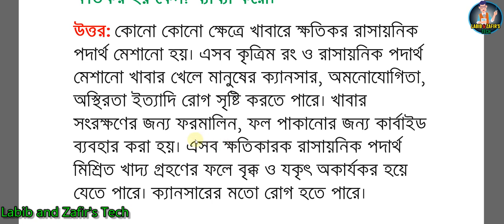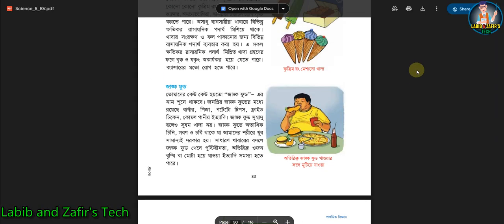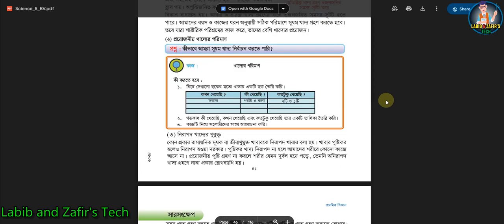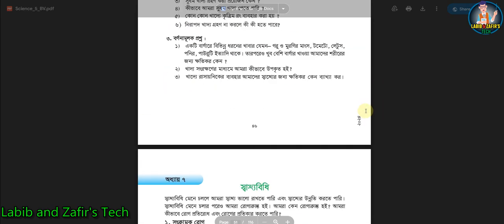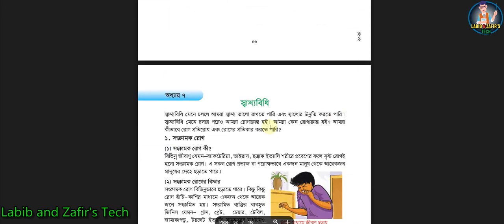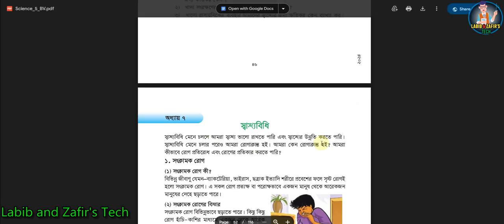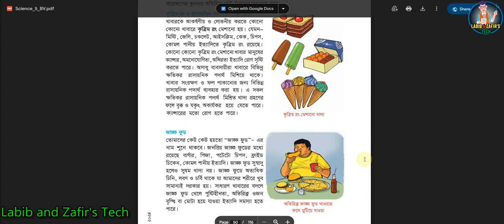When we go out and consume such food, our body is harmed by these items. Harmful chemicals such as formalin and carbide are used in food. These harmful chemical substances are mixed into food and can cause diseases like cancer. So friends, this was the last video — thank you all for watching. If you liked the video, please share it with everyone.